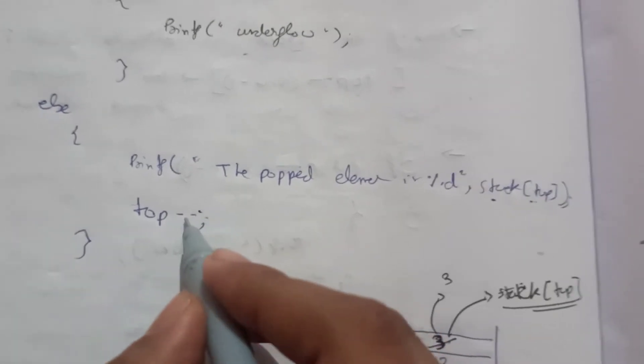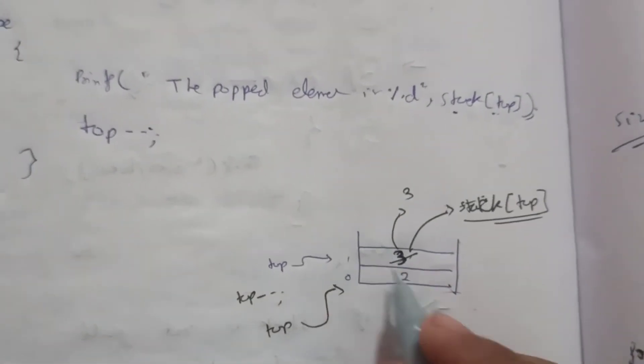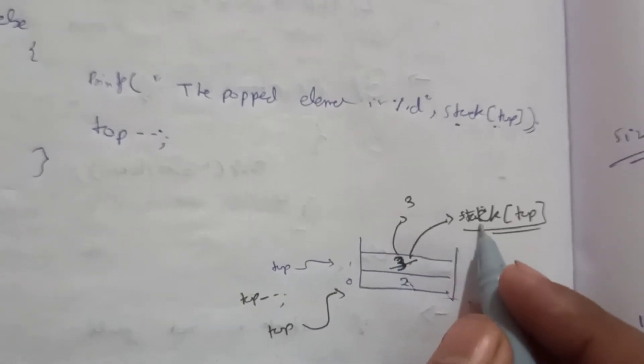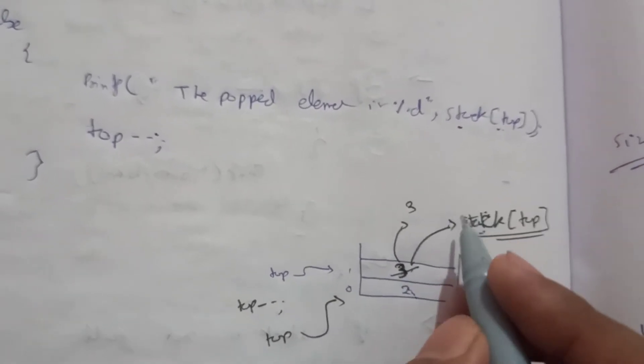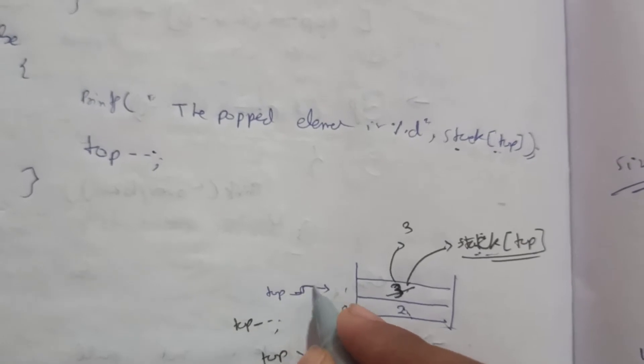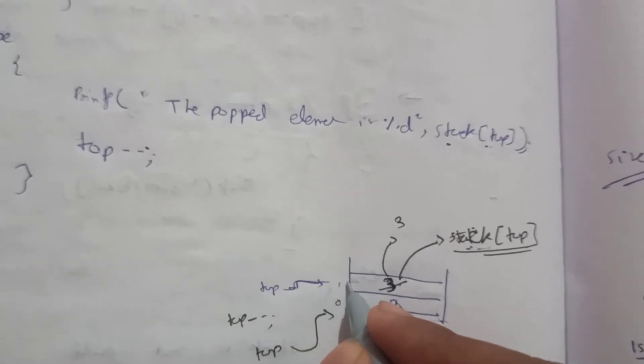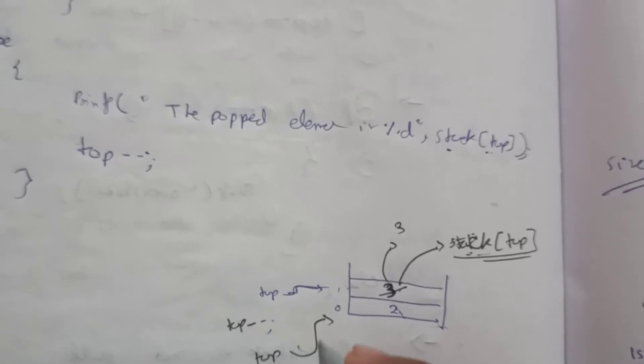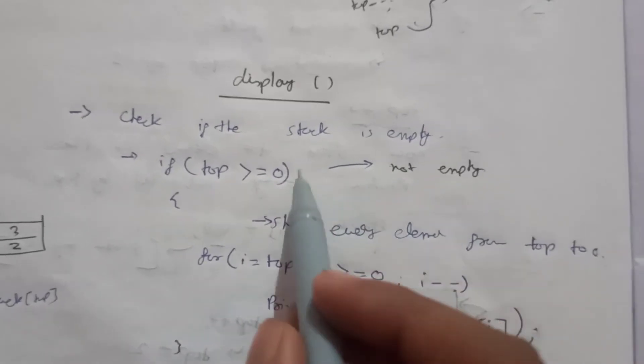After printing the value to be deleted, we do top minus minus — the top is decremented by one. Suppose we have values 2 and 3. We print stack[top] which is 3, then decrement top. Now top is pointing to index 0, which means 3 is deleted — we can no longer access it since the topmost element is now 2.